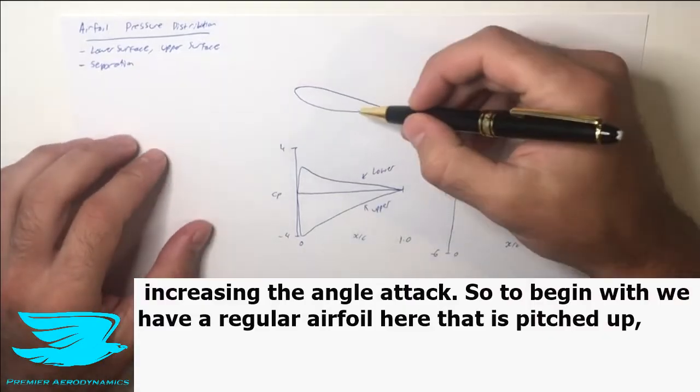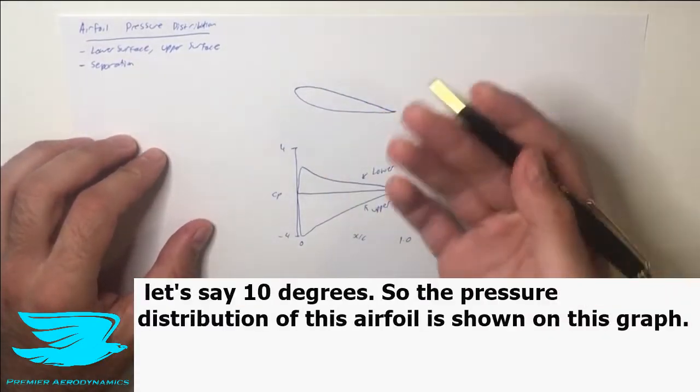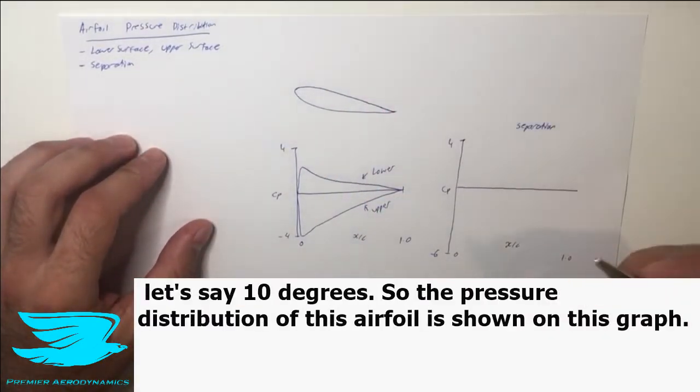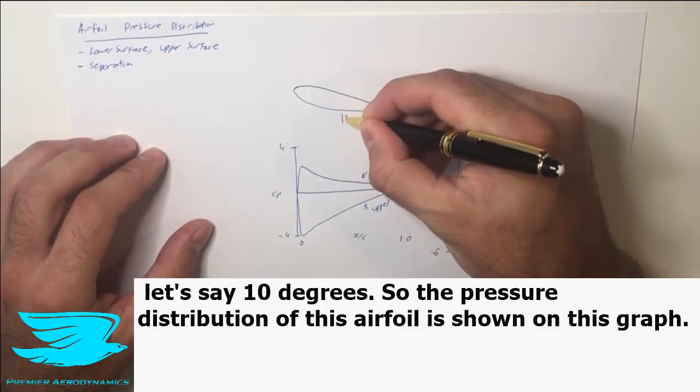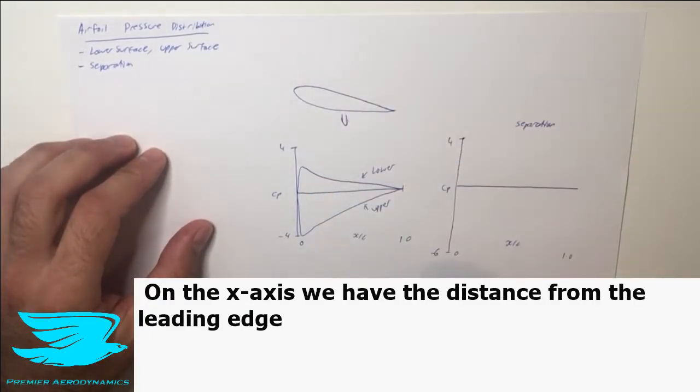To begin with, we have a regular airfoil pitched at let's say 10 degrees. The pressure distribution of this airfoil is shown in this graph, so let me explain what this graph means.